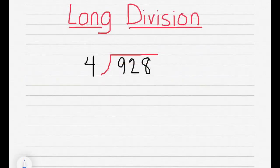4 goes into 9 two times. So then I multiply 4 times 2, which equals 8. I put my 8 under the 9 and I subtract it. And I get 1. I bring down the next digit, which is 2. Now I want to know how many times does 4 go into 12. And that's 3 times.